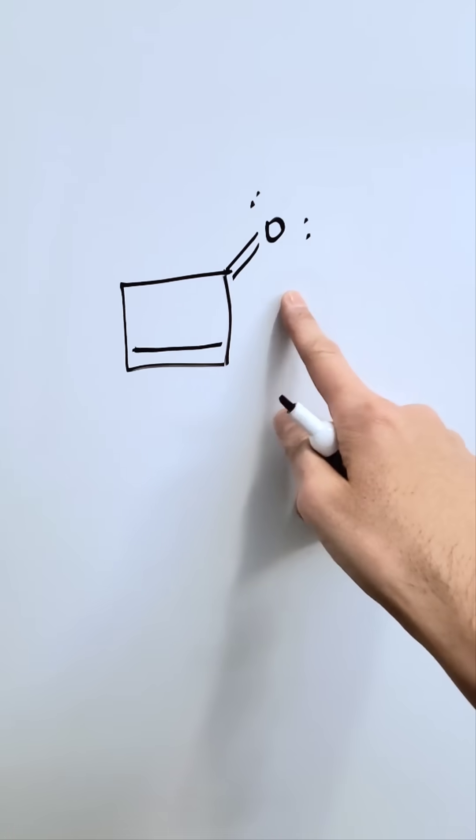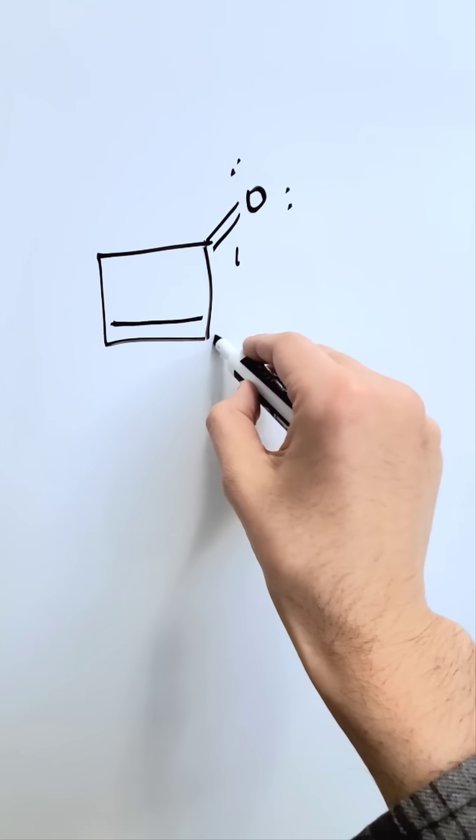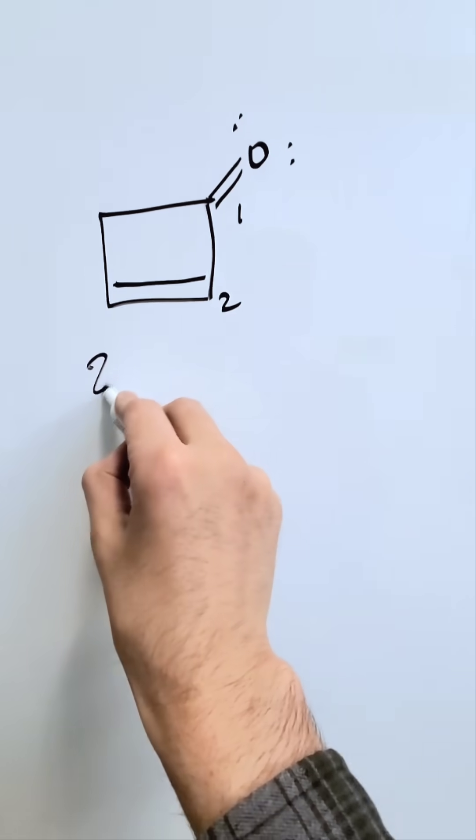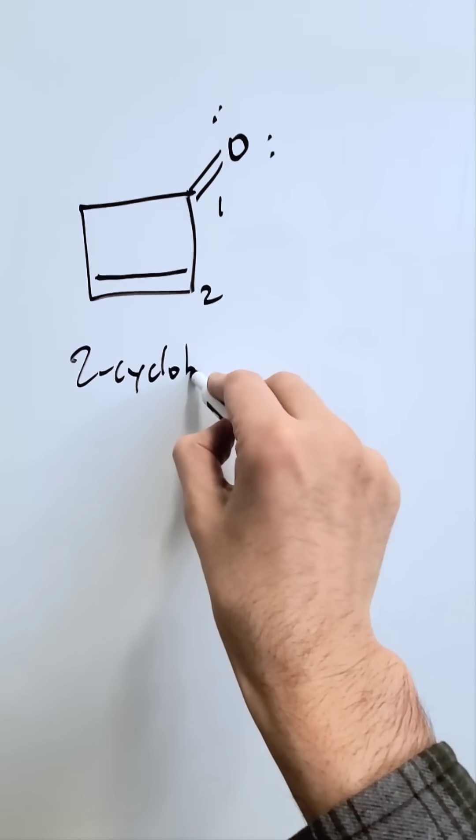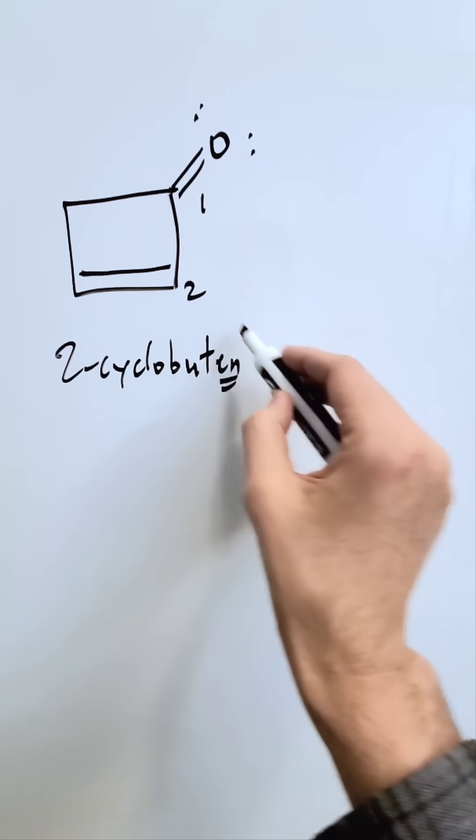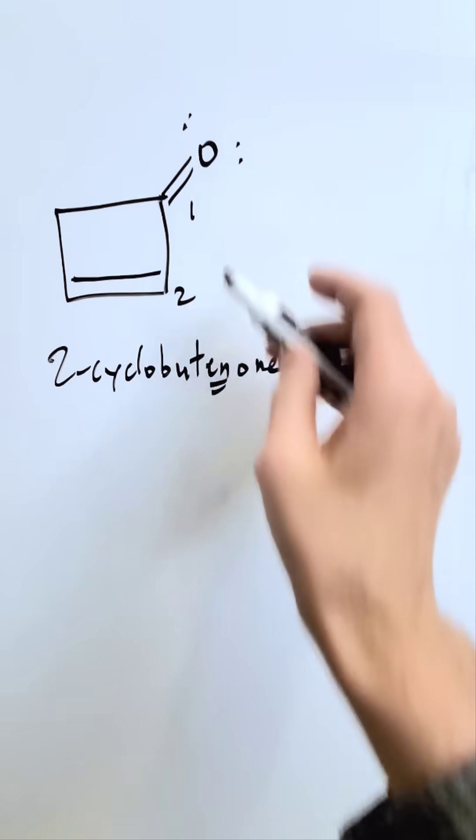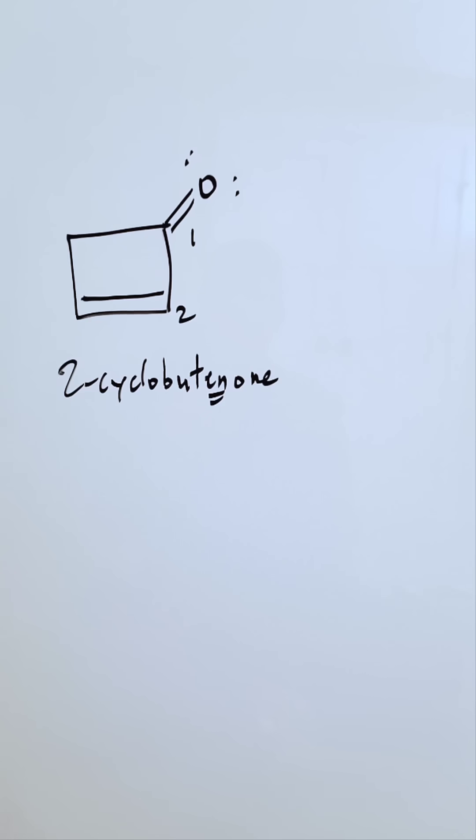Examine this ketone. I have here carbon 1, carbon 2. I'm looking over here at what? 2-cyclobutanone. This EN indicates an alkene and then ON for a ketone, and you see it. This is 2-cyclobutenone.